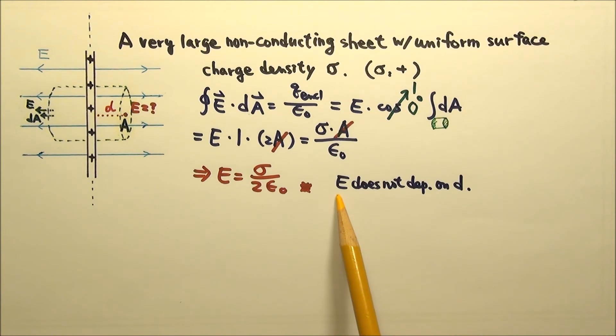Since the strength of the electric field does not depend on d, the distance, that means when the distance doubles, the electric field would stay the same. This would be true as long as the distance is still much, much smaller than the size of the large sheet.